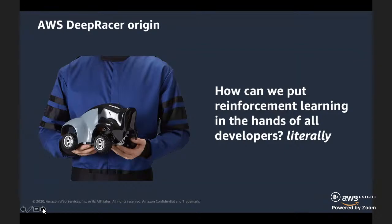DeepRacer finds its origin with a previous service from the AWS AI devices team. Developers told us they loved the hands-on approach used with DeepLens, which was the first AI device product made by AWS. In 2018, Amazon SageMaker added support for reinforcement learning, and we asked ourselves how we can put this new technology into the hands of all developers who want to learn about it. And so the idea of DeepRacer was born.